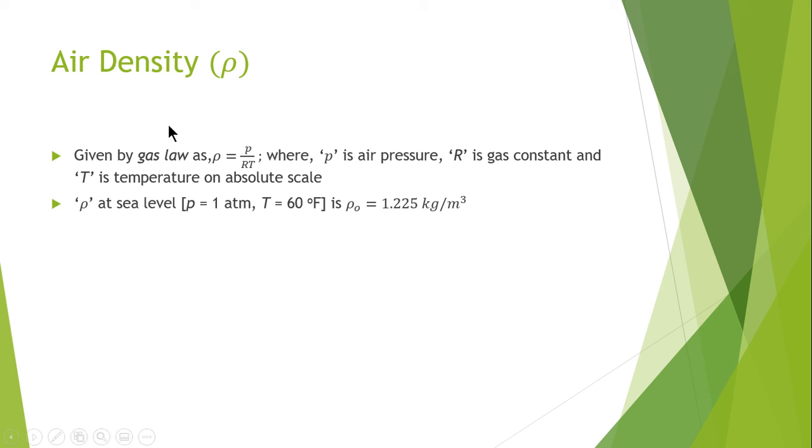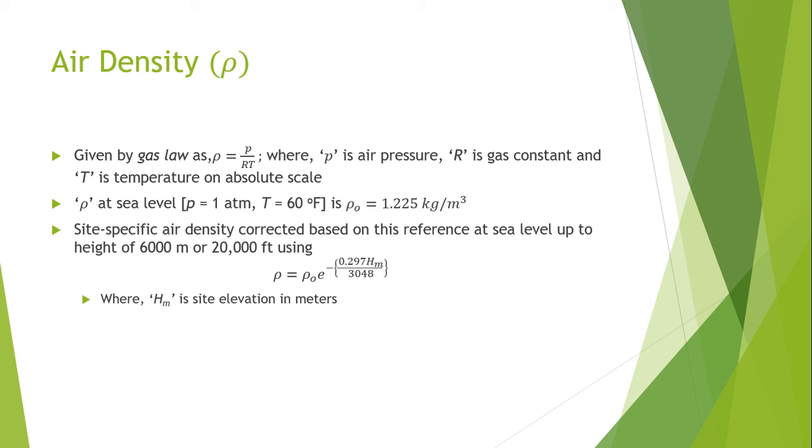The air density at sea level with atmospheric pressure of 1 and a temperature of 60 degree Fahrenheit is 1.225 kilograms per cubic meter. The next important factor is the site specific air density.